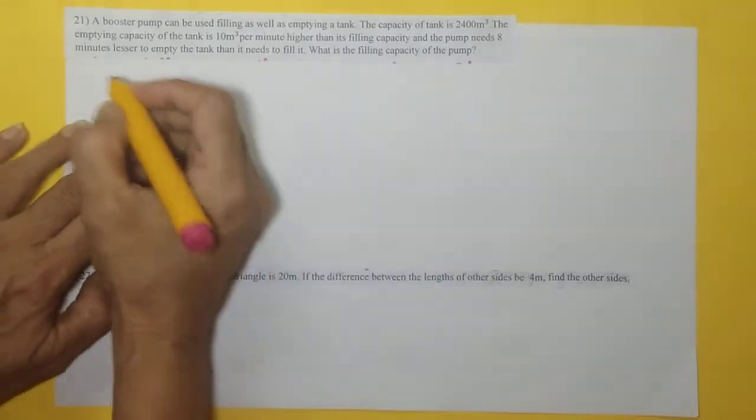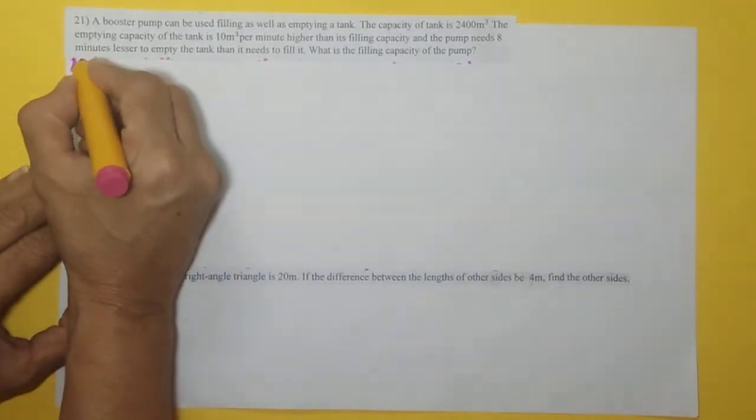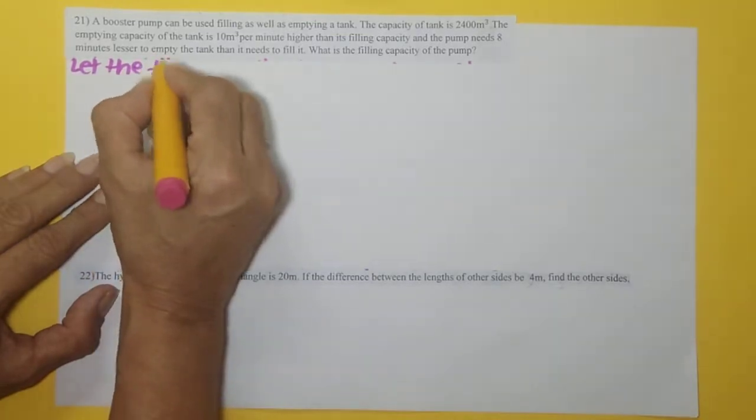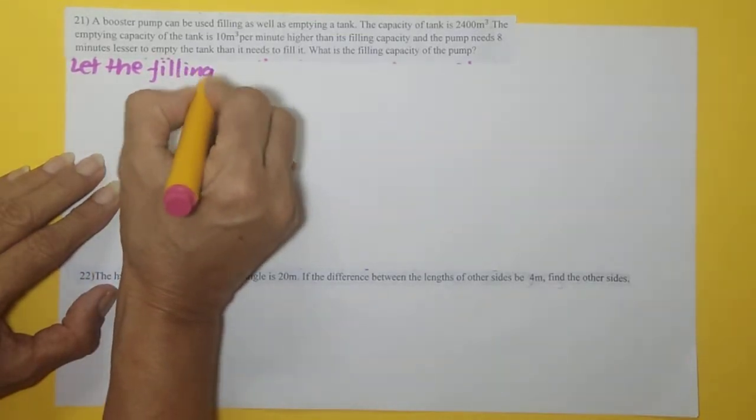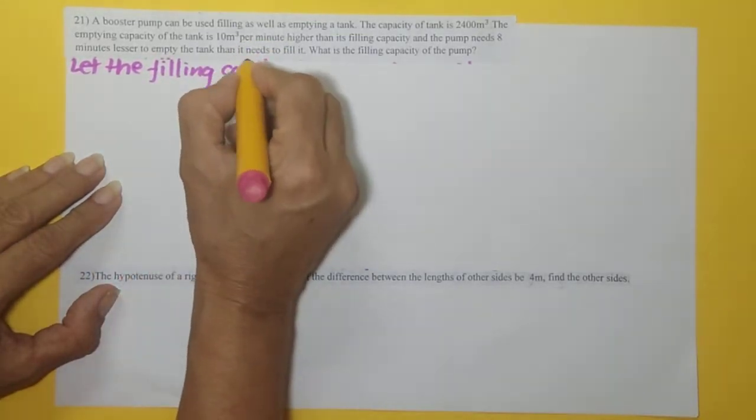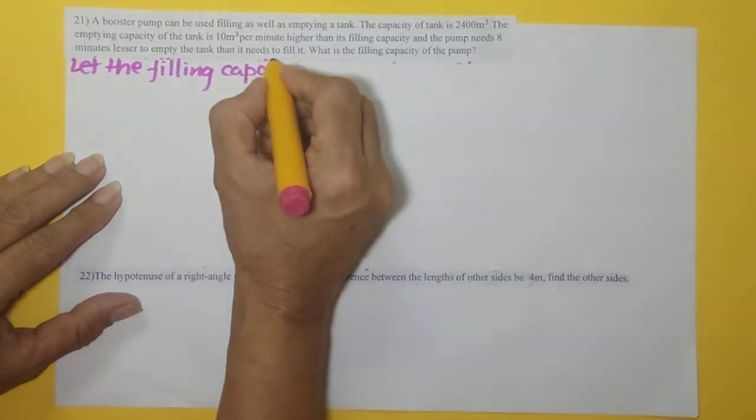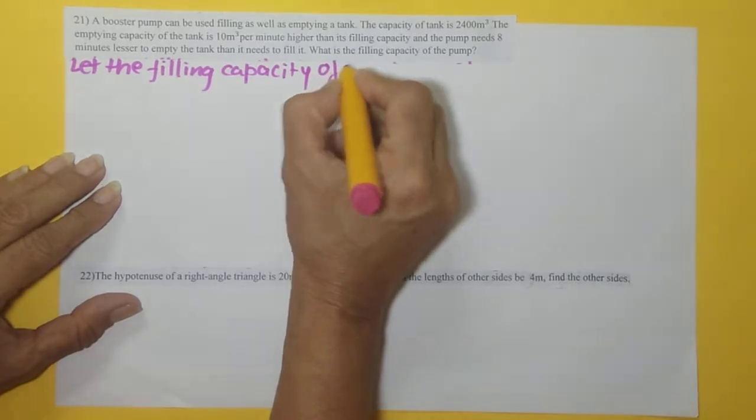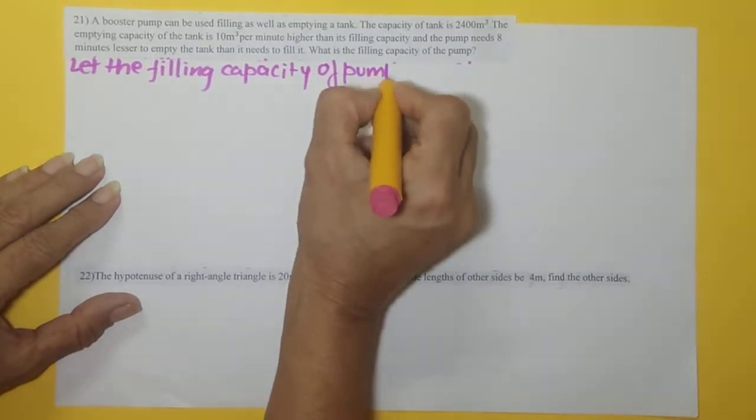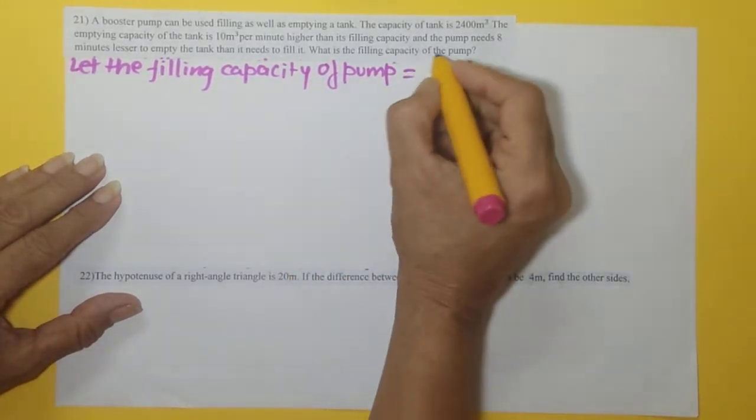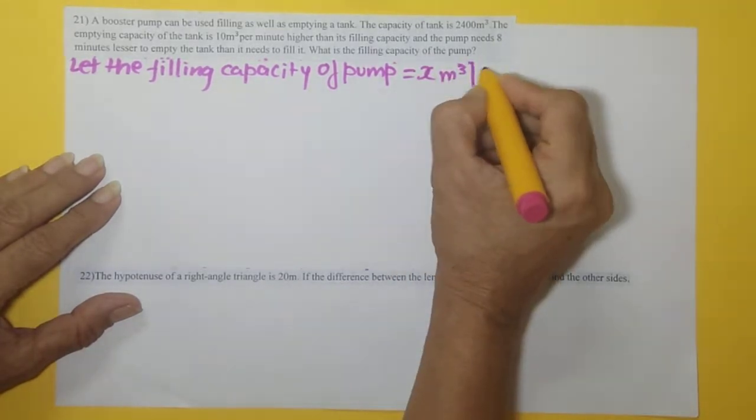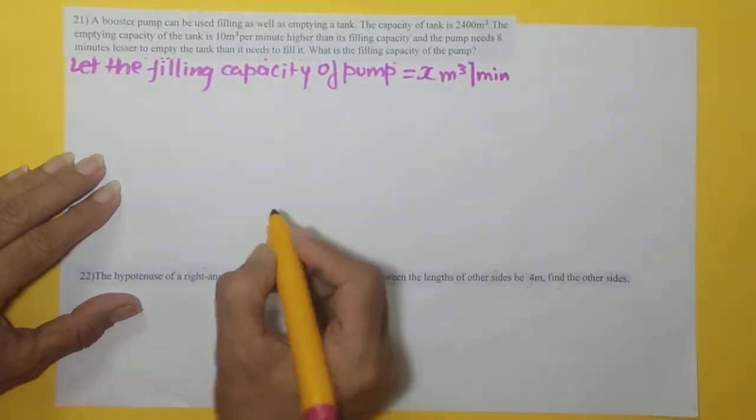So let us start like this. Let the filling capacity of the pump be equal to x meter cube per minute.